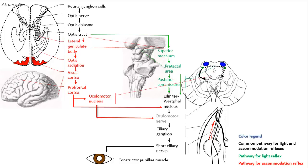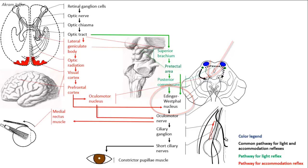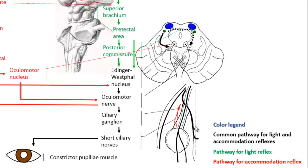The fibers in the midbrain synapse with the oculomotor nucleus and with the Edinger-Westphal nucleus. Motor fibers carried by the oculomotor nerve supply the medial rectus muscle and cause convergence of both eyes. The efferent part from the Edinger-Westphal nucleus, which is the parasympathetic autonomic nucleus, consists of preganglionic parasympathetic fibers that accompany the oculomotor nerve and synapse in the ciliary ganglion.